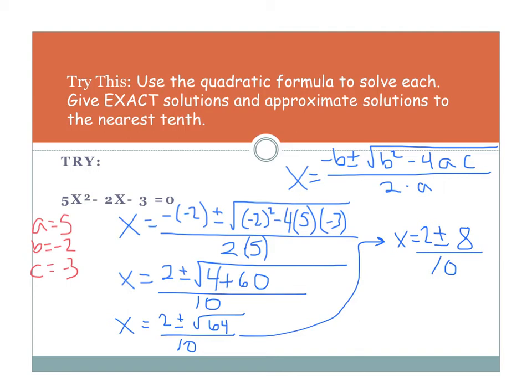So, I'm going to have x equals 2 plus or minus 8 all over 10. All right. Well, what's 2 plus 8? That's 10 divided by 10 gives me 1. So, x is going to equal 1.